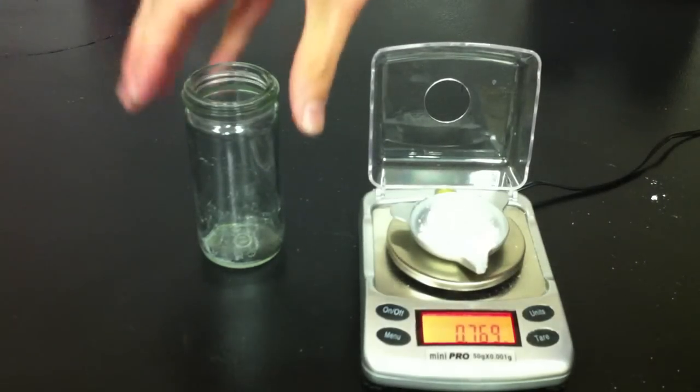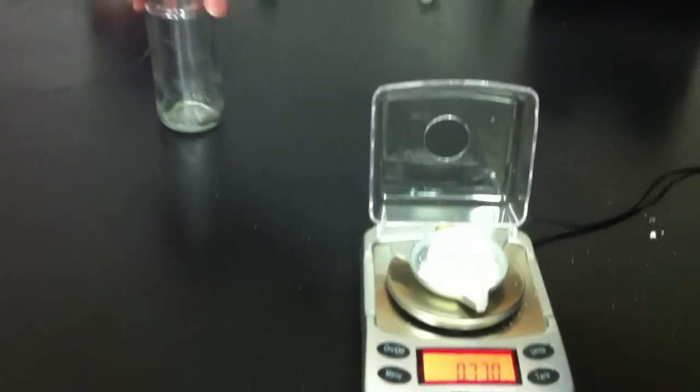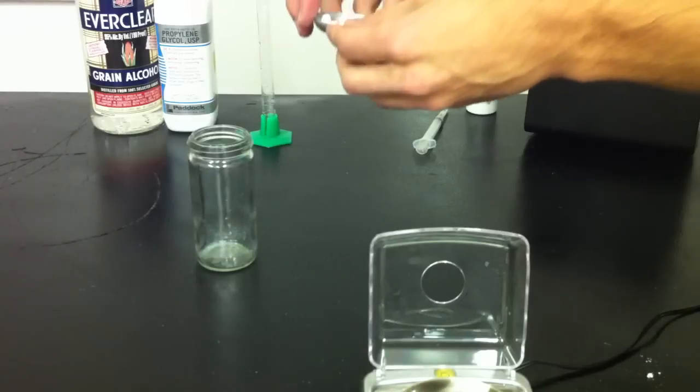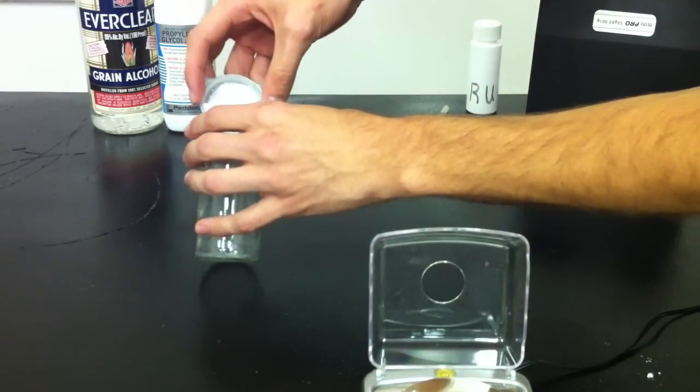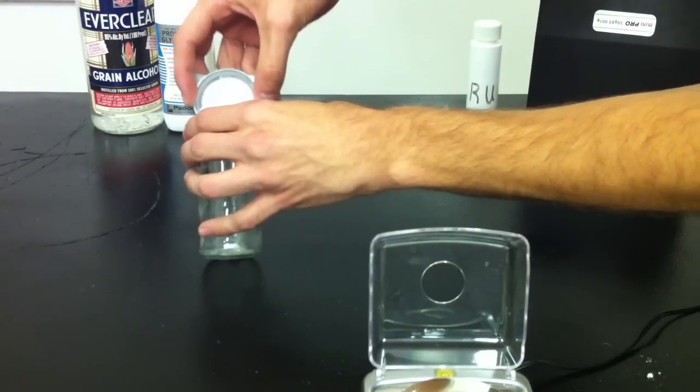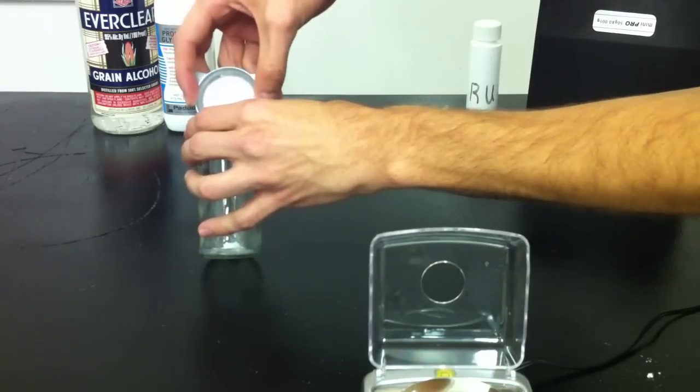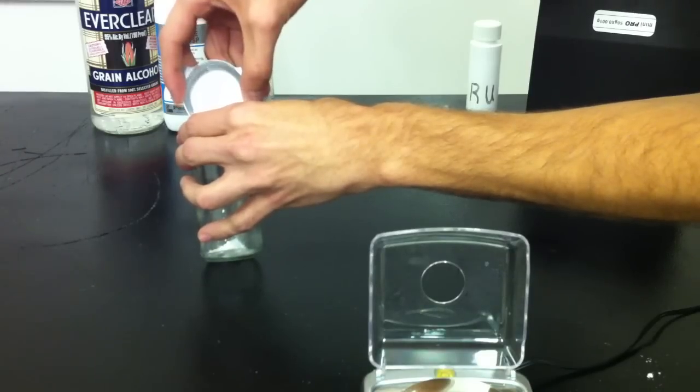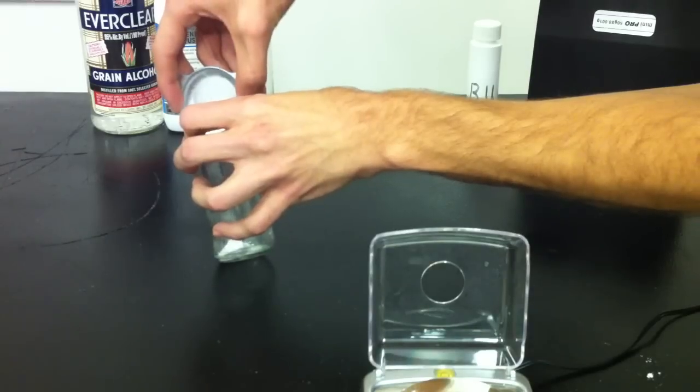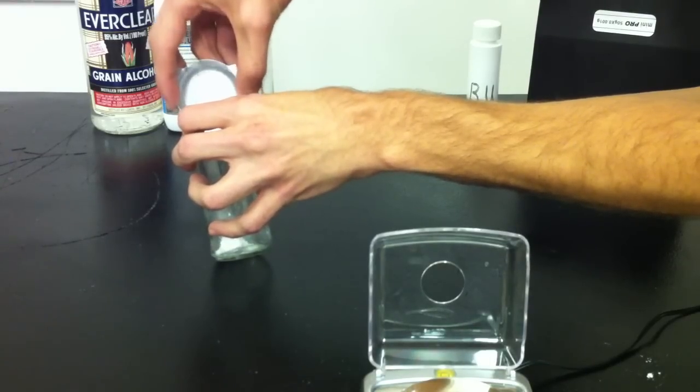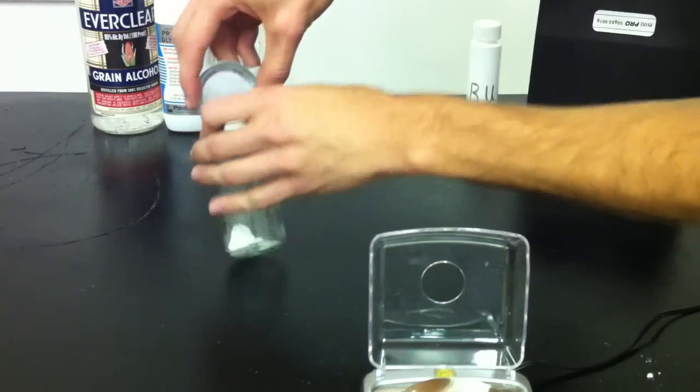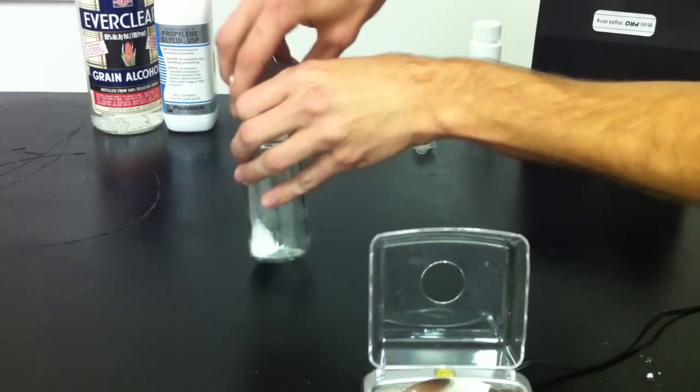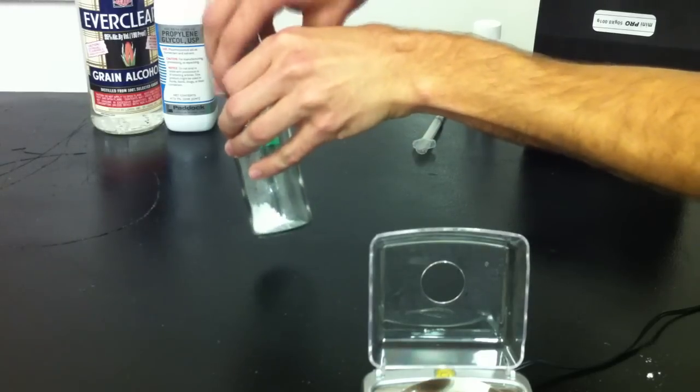The next step is to go ahead and put that RU into anything that you can use to mix it with the alcohol. So you want to be sure to get it all in.